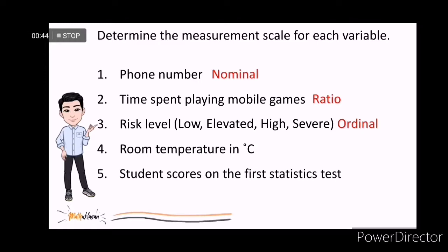Room temperature in degrees Celsius is always interval. And student scores on the first statistics test is also ratio.